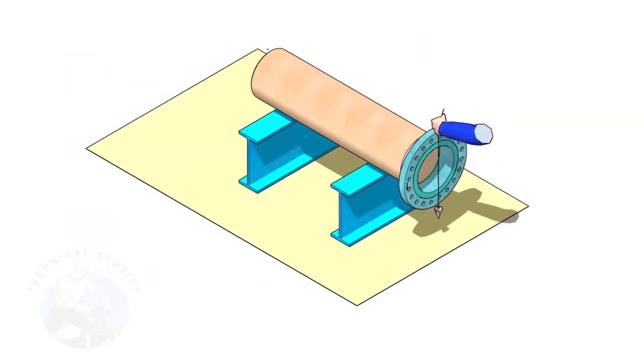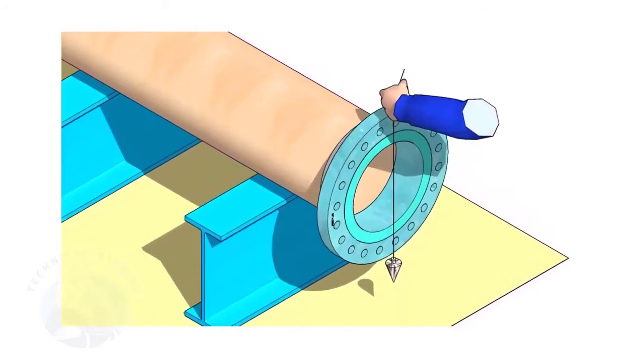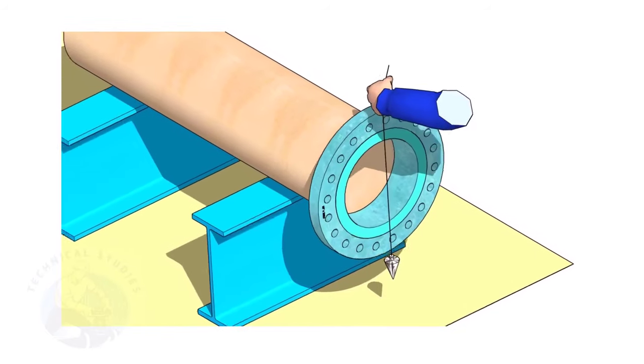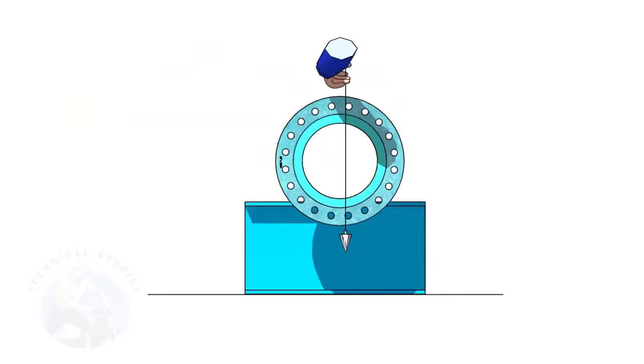Correct the plumbness of the flange. Choose a set of holes closer to the center of the flange. This will ensure more accuracy.